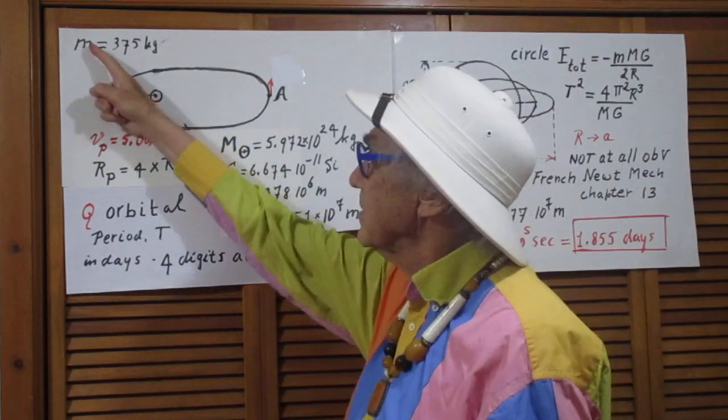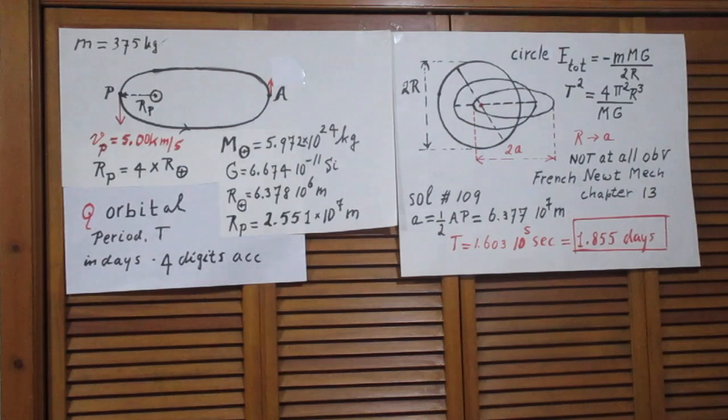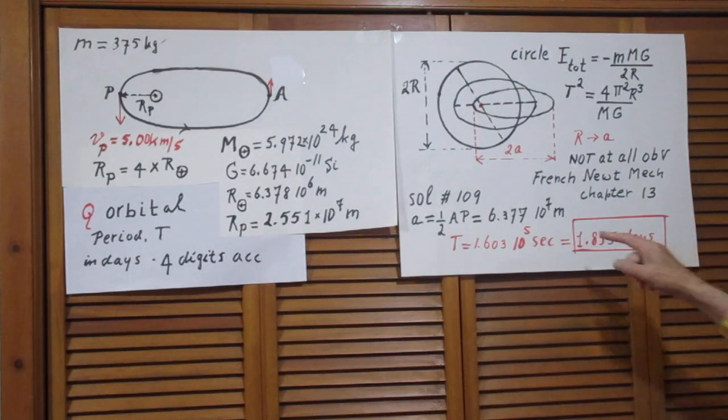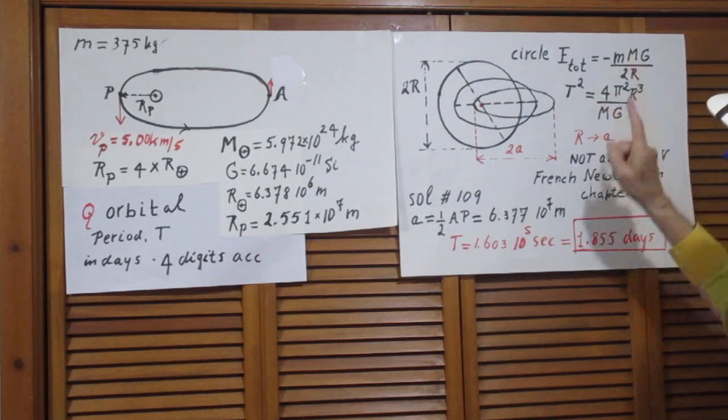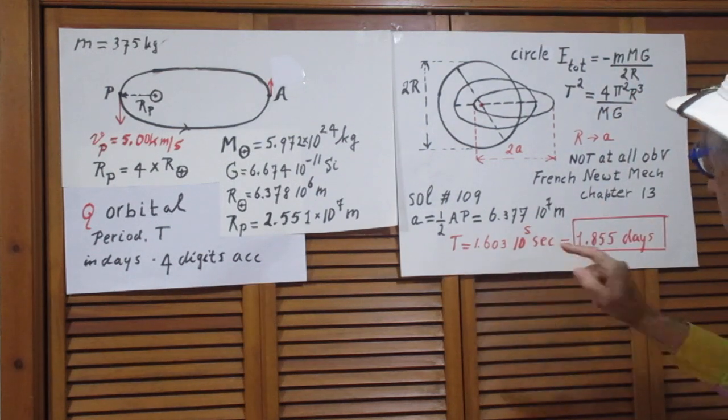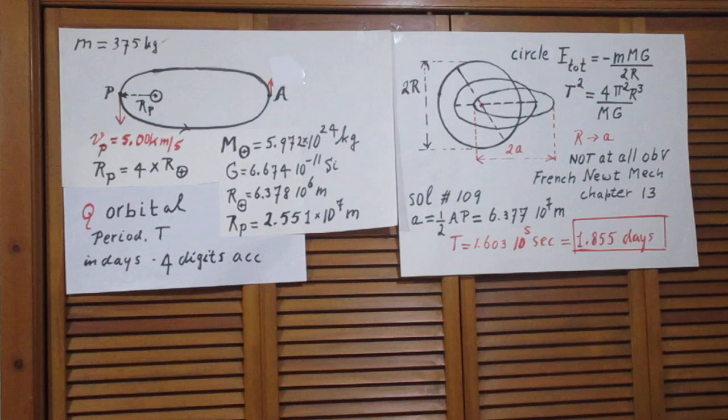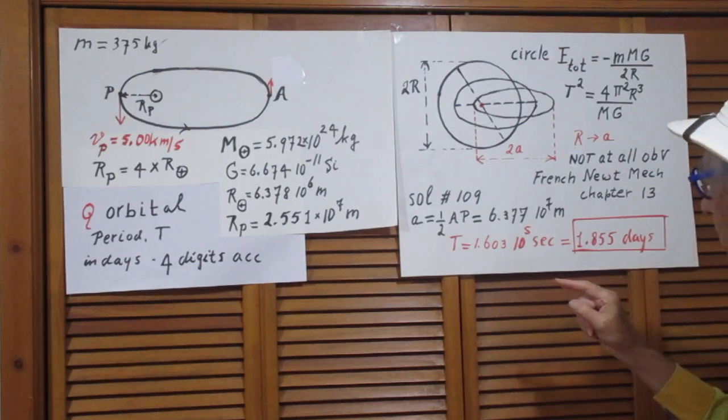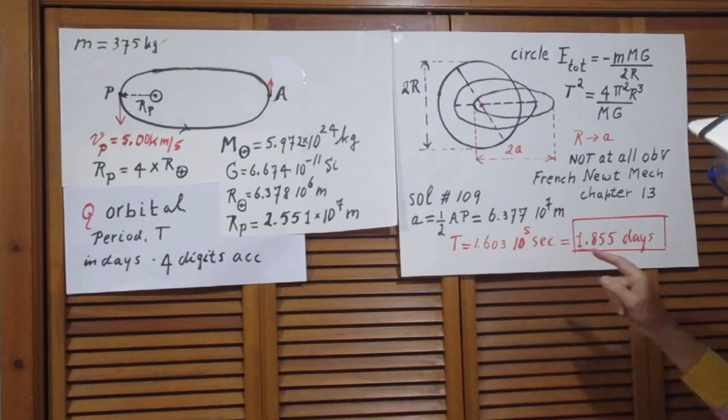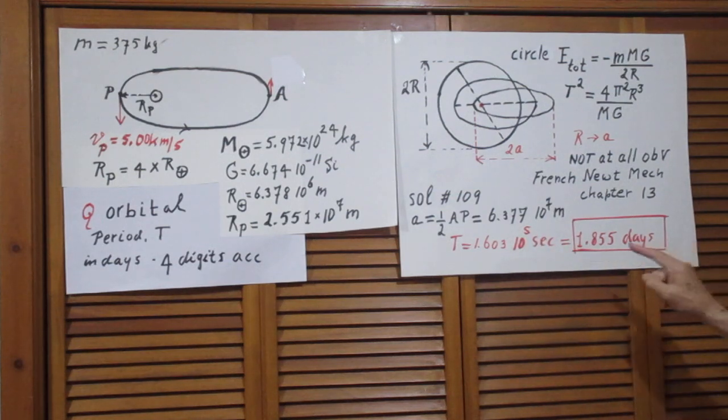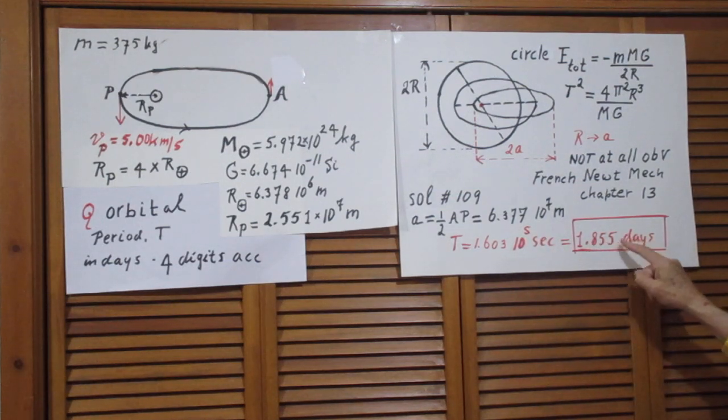This is meters. This is not the mass of the satellite. So, you plot that A in here and you immediately find t-squared and you find t. So, the orbital period, the time is 1.603 times 10 to the 5 seconds which is 1.855 days.